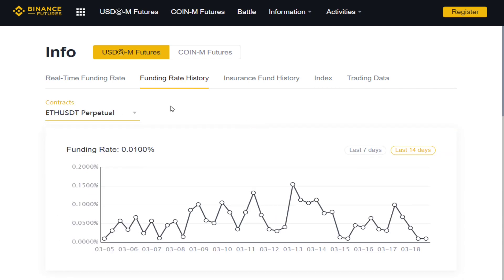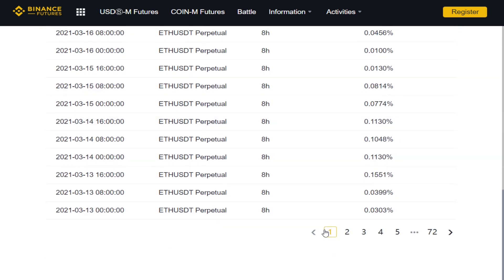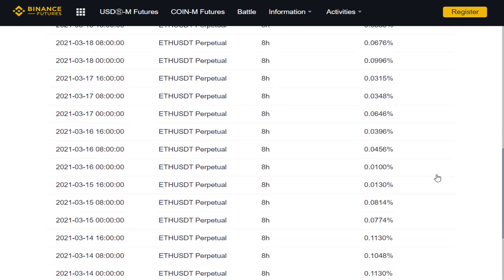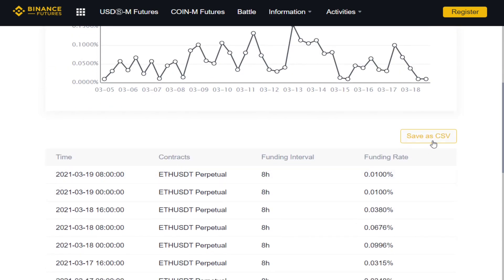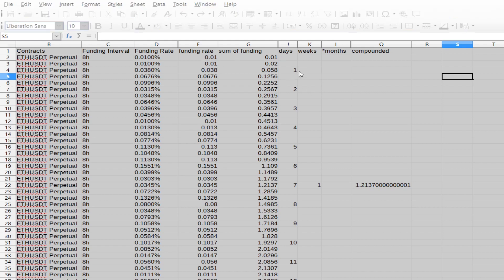Once you're on this page, you can find more information by clicking on funding rate history and then going to the drop down here and choosing Ethereum. Remember, we don't need to use Ethereum. This will work just the same with any other asset. The data shown here is only from the last two weeks. To get a bigger picture, we need all of these numbers from these 72 different pages. Luckily, we can just download that into a spreadsheet by clicking on this and saving it wherever you want.